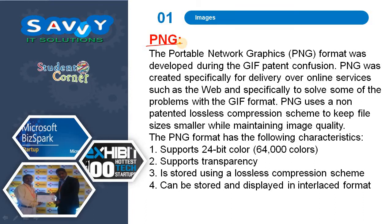The next format is PNG. The Portable Network Graphics format was developed during the GIF patent confusion. PNG was created specifically for delivery over online services such as the web, and specifically to solve some of the problems with the GIF format. PNG uses a non-patented lossless compression scheme to keep file sizes smaller while maintaining image quality. The PNG format supports 24-bit color (64,000 colors), supports transparency, is stored using a lossless compression scheme, and can be stored and displayed in interlaced format.